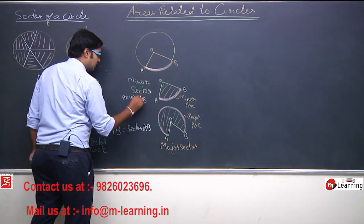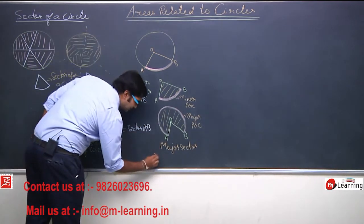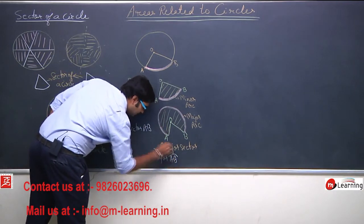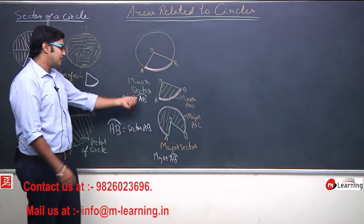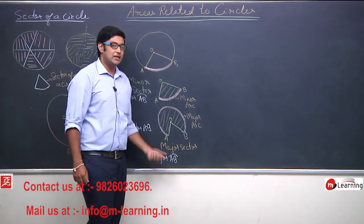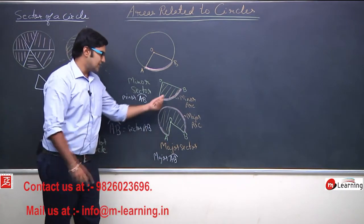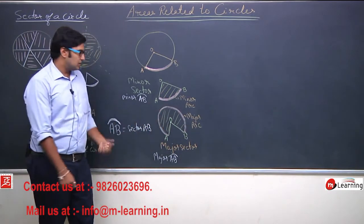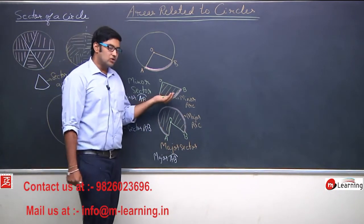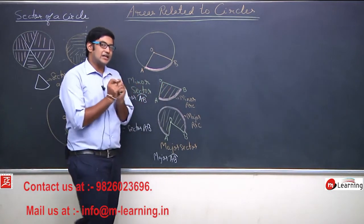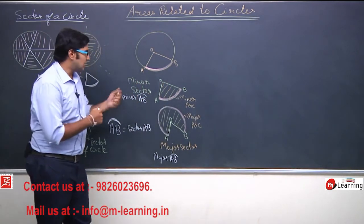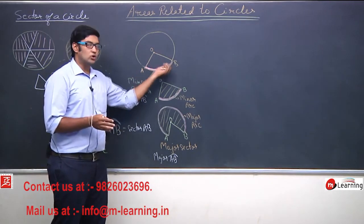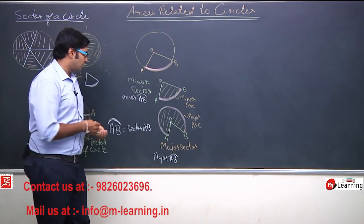So, yeh hua arc aur sector ke beech mein relation. Isse hum kahenge major AB arc. This is minor AB arc, this is major AB arc. Dono mein difference kya hai? Hum clearly dekh sakte hain ye arc chhoti hai, ye arc badi hai. So, abhi humne yeh dekha ki sector ka matlab kya hai — sector means the area contained between two radii of the circle.